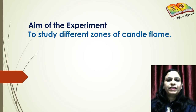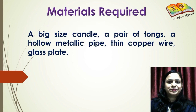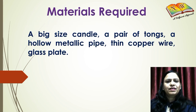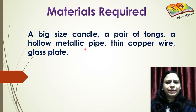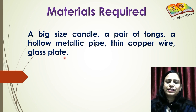In this experiment we are going to study the different zones of a candle flame. The materials required are a big sized candle, a pair of tongs, a hollow metallic pipe, a thin copper wire, and a glass plate or glass rod.